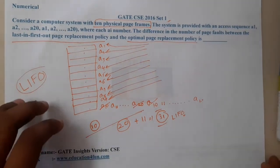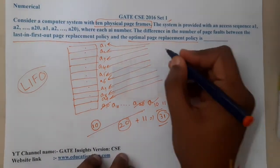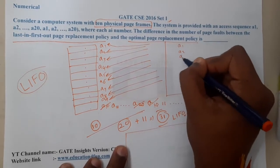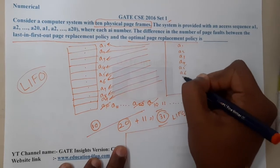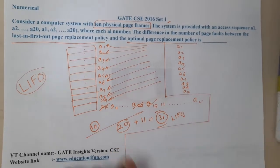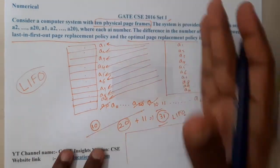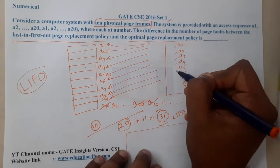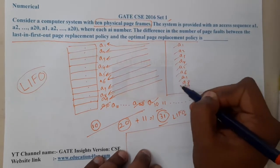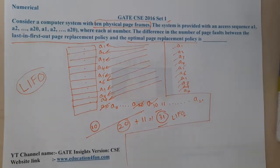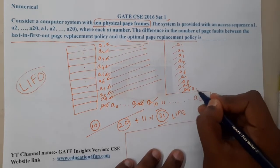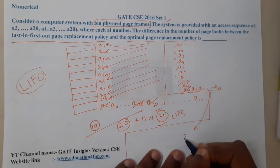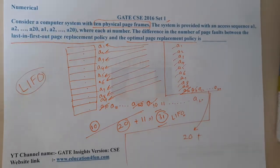Now let us do the same analysis for Optimal page replacement. a1 through a10 load in — that is 10 mandatory faults. Optimal checks the future: it sees a1 through a9 will be used again soon, but a10 will be used last among them. So it replaces a10 with a11, a12, and so on up to a20 — giving us 20 mandatory faults total.